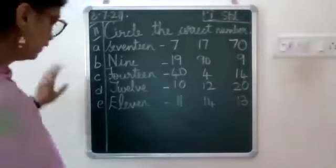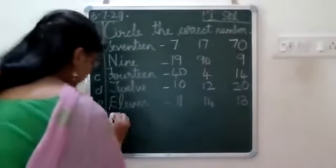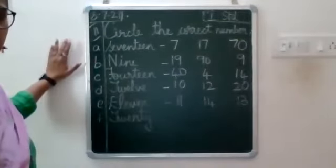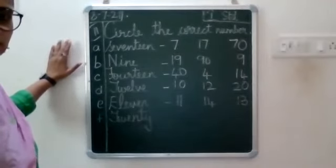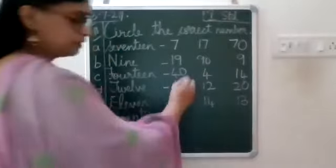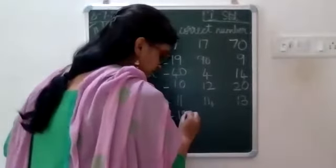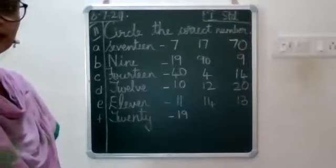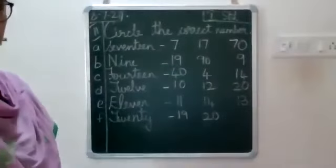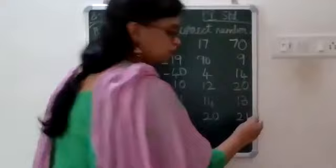And then the last sum for the day — write F in the margin, leave a line and write F. Write capital T-W-E-N-T-Y, 20. Put a dash under the same thing. This side write 19 below 11, write 20 below 14, and write 21 below 13.